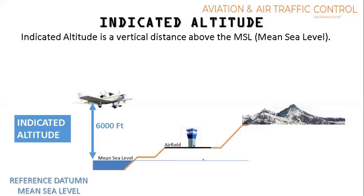Indicated altitude. Indicated altitude is what we can see on our instruments. Indicated altitude is a vertical distance above the mean sea level. Remember that the reference datum for indicated altitude is mean sea level.